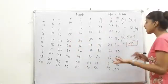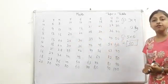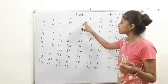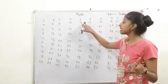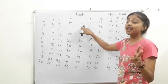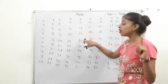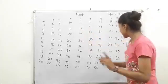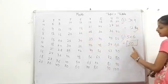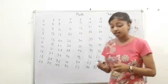And similarly, we can see in the table of 6 also. Do with me. 6 ones are 6, 6 twos are 12, 6 threes are 18, 6 fours are 24, 6 fives are 30.